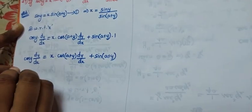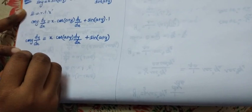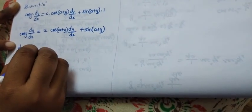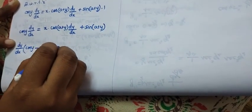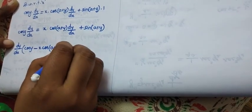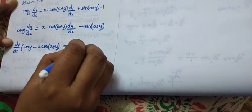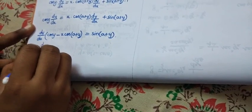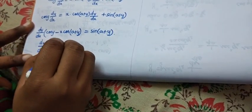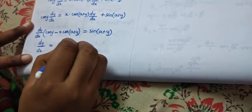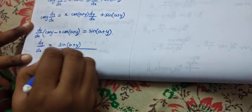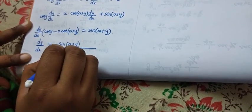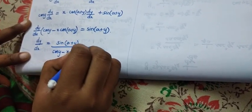We have to bring dy/dx to one side. Taking dy/dx common outside, we get: dy/dx·(cos y minus x·cos(a+y)) equals sin(a+y). Therefore, dy/dx equals sin(a+y) divided by (cos y minus x·cos(a+y)).